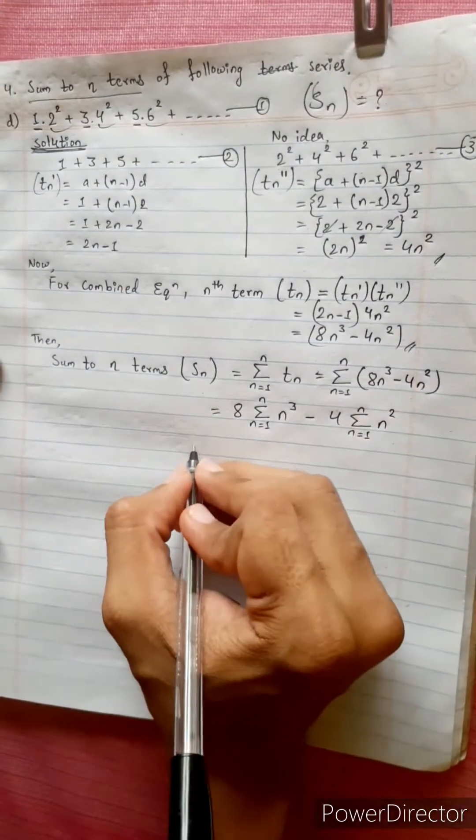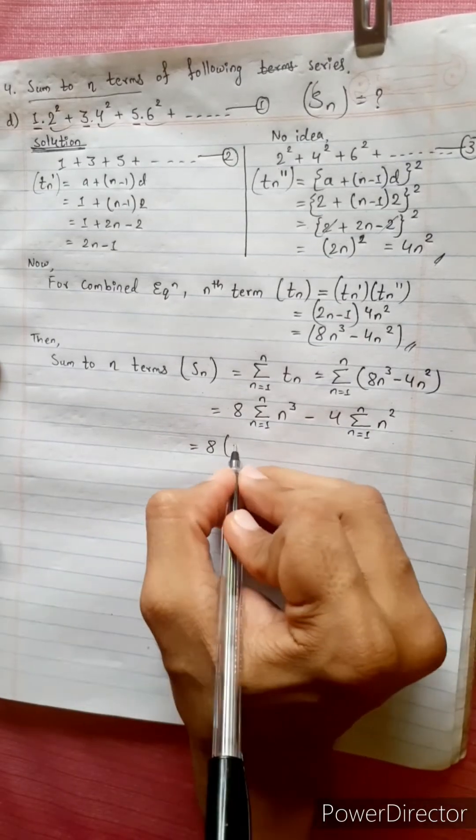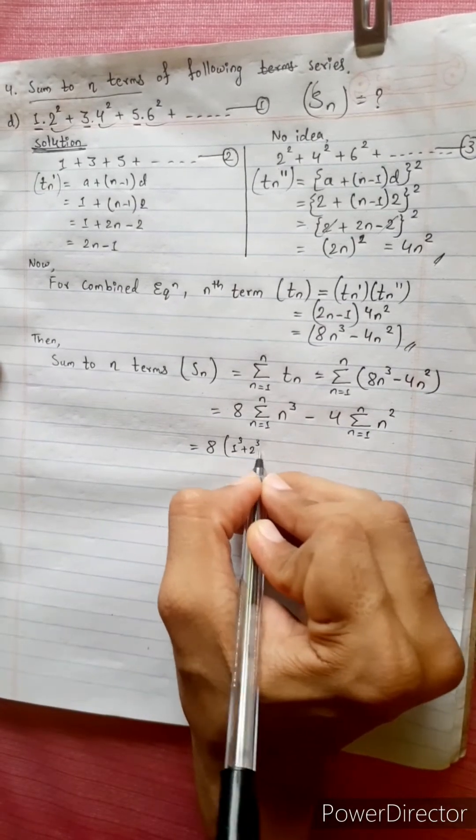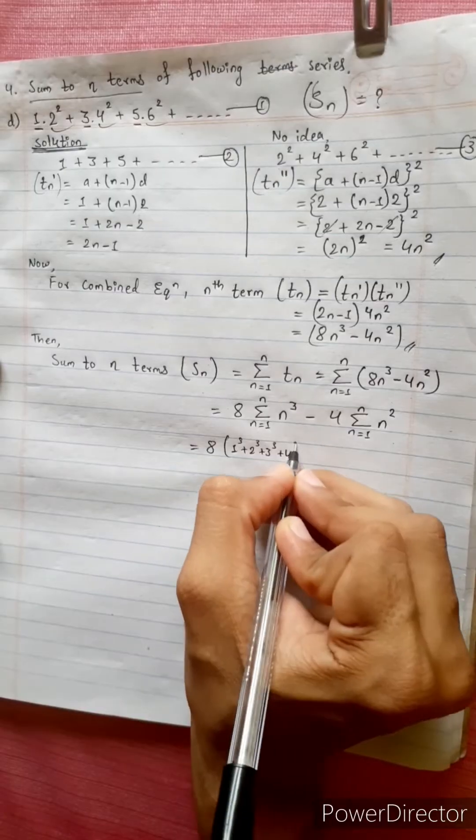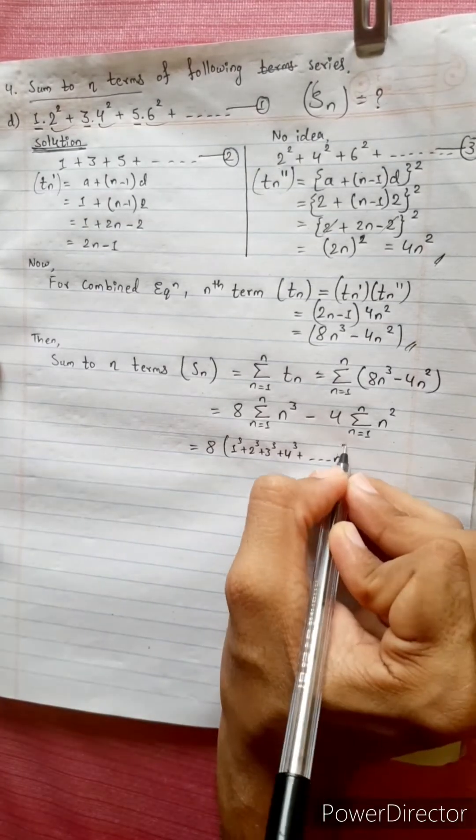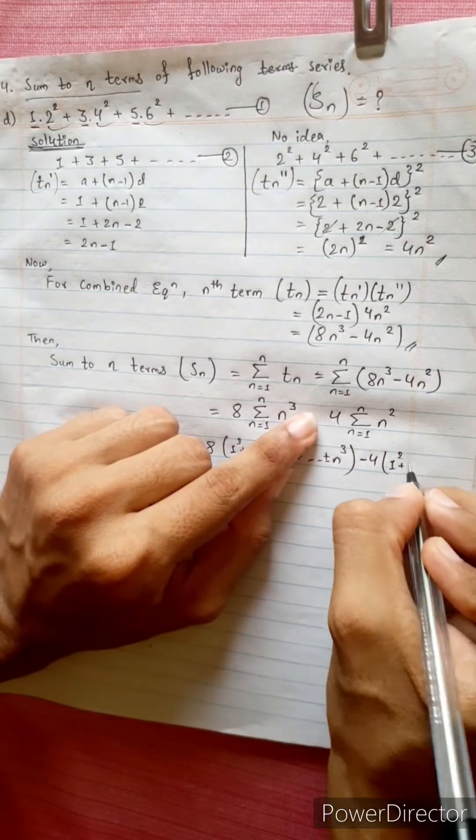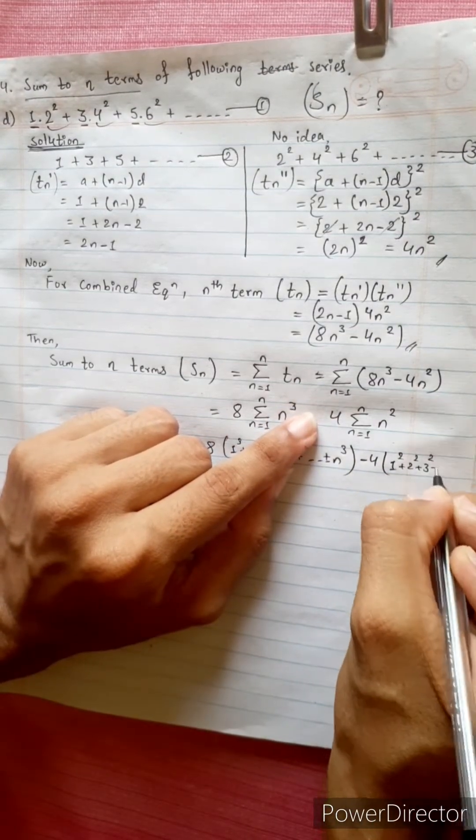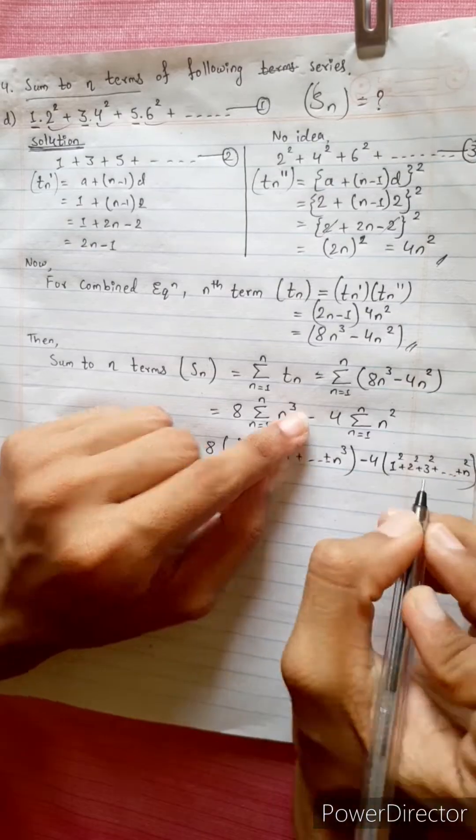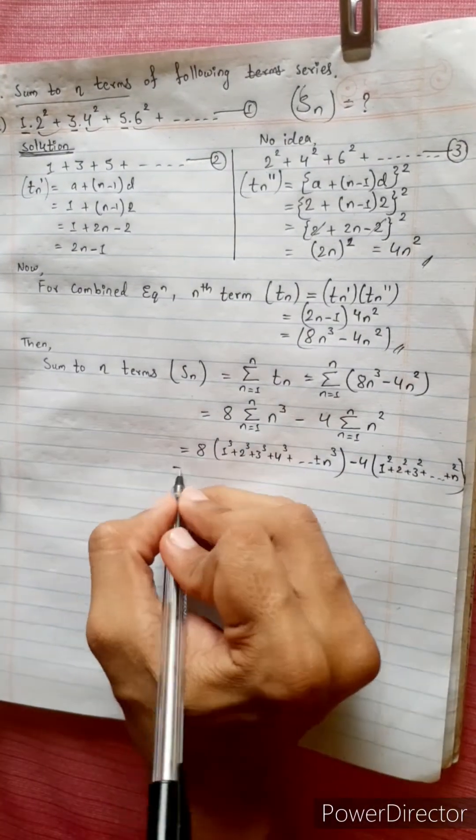Now let's expand. 8 times n cube: 1 cube, 2 cube, 3 cube, 4 cube, last term n cube, minus 4 times n square: 1 square, 2 square, 3 square, n square.